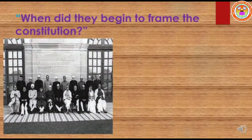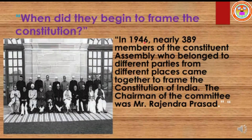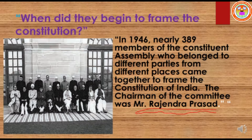Let us see when they began to frame the Constitution. In 1946, nearly 389 members of the Constituent Assembly, who belonged to different parties from different places, came together to frame the Constitution of India. The chairman of the committee was Dr. Rajendra Prasad, who was the first President of India.